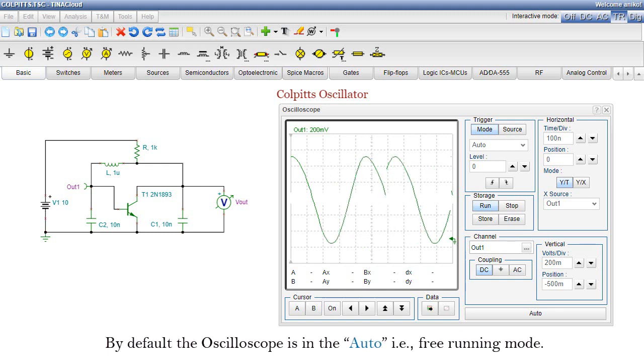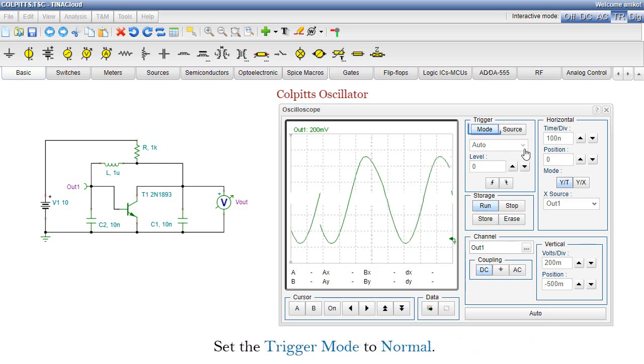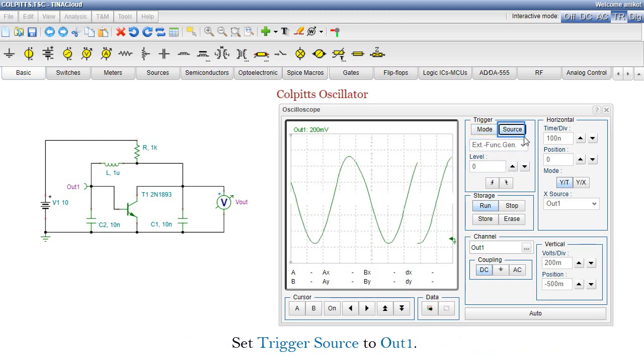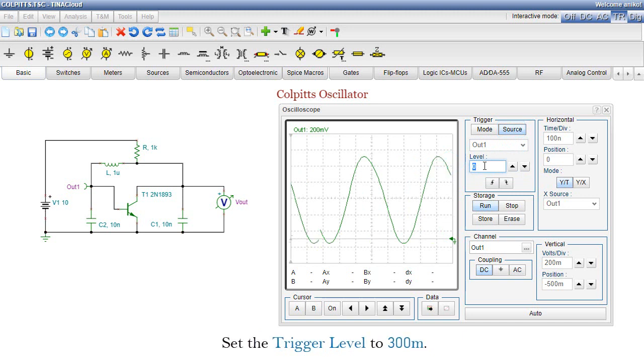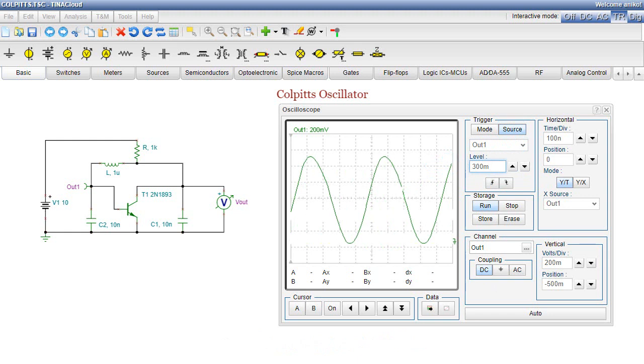By default, the oscilloscope is in the auto, i.e. free running mode. To get a steady-state image, you should enable triggering as follows. Set the trigger mode to Normal. Set the trigger source to Out1. Set the trigger level to 300 millivolts. Consequently, the waveform is stabilized.